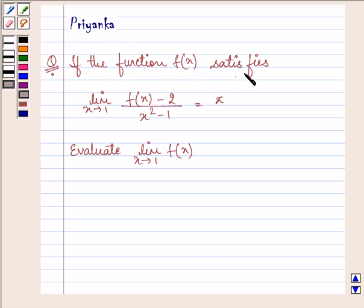if the function f(x) satisfies limit as x approaches 1, f(x) minus 2 divided by x squared minus 1 is equal to pi, evaluate limit as x approaches 1 of the function.